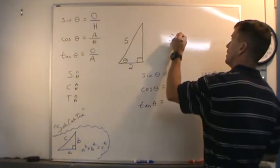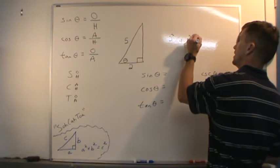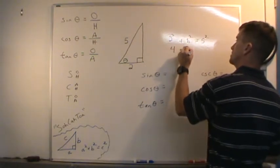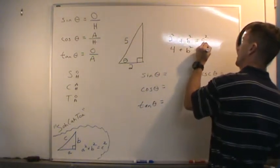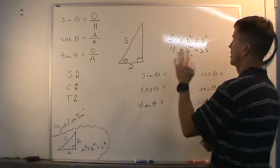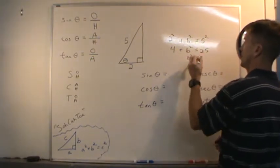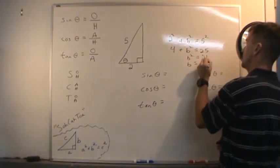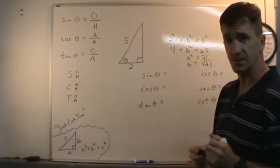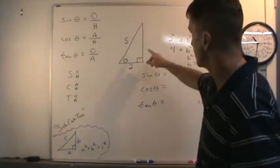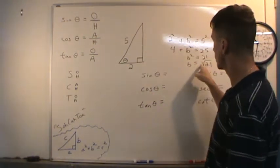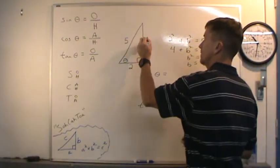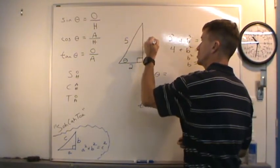A squared plus B squared equals C squared. So 4 plus B squared equals 25. Subtract 4 from both sides: 25 minus 4 is 21. B equals plus or minus the square root of 21, but since it has to be a length it's positive. So the side is the square root of 21. Now I'm going to put that in the triangle — this side is the square root of 21.